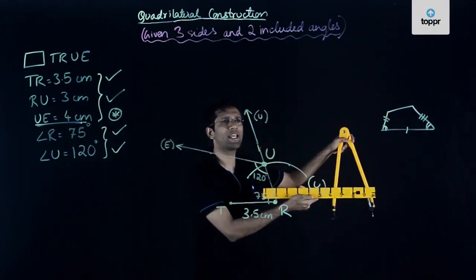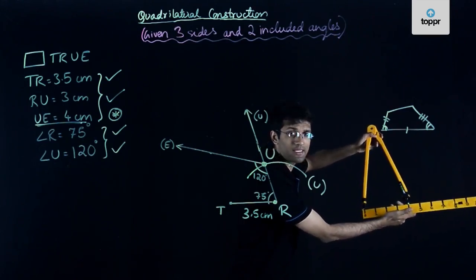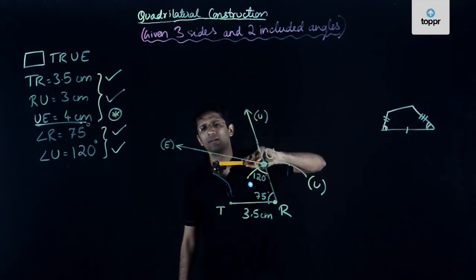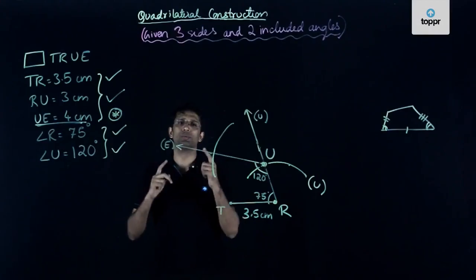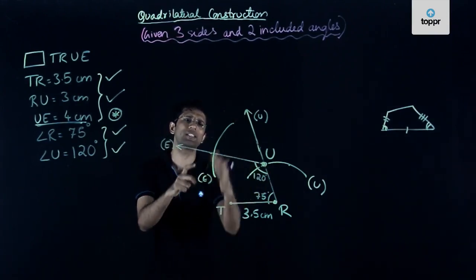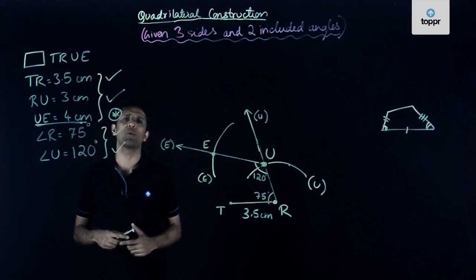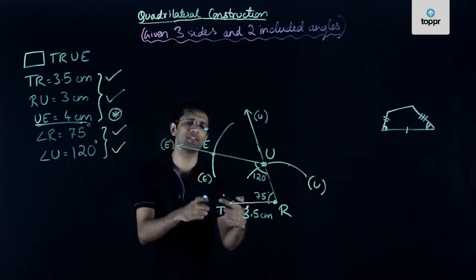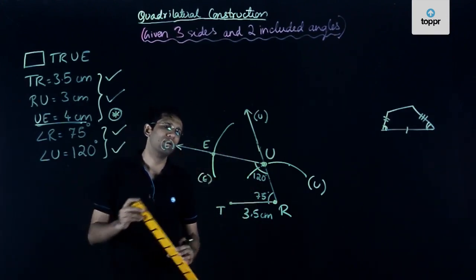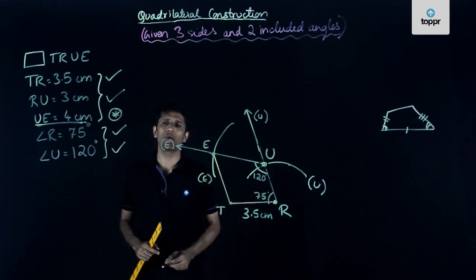Now we use the only piece of information not yet used: UE is equal to 4 centimeters. We know the location of point U and that point E lies somewhere on this ray. I take a distance of 4 centimeters on this ray — using the compass and scale at 4 centimeters, I place the tip at point U and draw an arc. The point of intersection of this arc and the ray is the exact position of point E. Now all four vertices are ready, and I join vertices E and T to complete the quadrilateral TRUE.